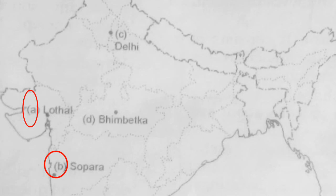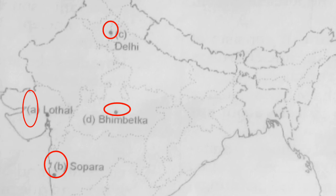The third one is the place where the Red Fort is situated — that is Delhi. And the fourth one is an archaeological site, that is Bhimbetka. It is in Madhya Pradesh.